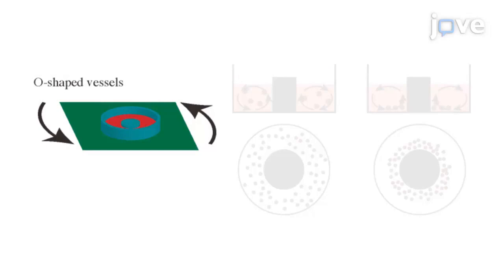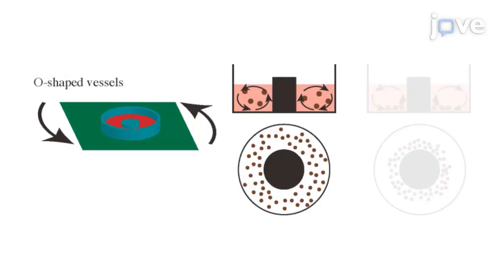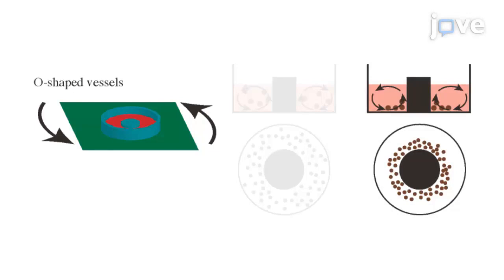On the other hand, O-shaped vessels eliminate the center region, which prevents medium flow sweeping cells into the center-bottom region. This limits the accumulation of cells that can realize homogeneous aggregation.